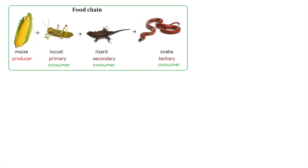A producer is an organism that can produce its own energy-rich food — any photosynthetic organism that can use sunlight to produce an energy-rich molecule. Producers are very important in ecosystems because they take energy from the sun and store it in a molecule that other organisms can benefit from. Consumers must eat other organisms to get energy. A primary consumer is always a herbivore that eats plants. The secondary consumer eats the primary consumer, the tertiary consumer eats the secondary consumer, and so on.